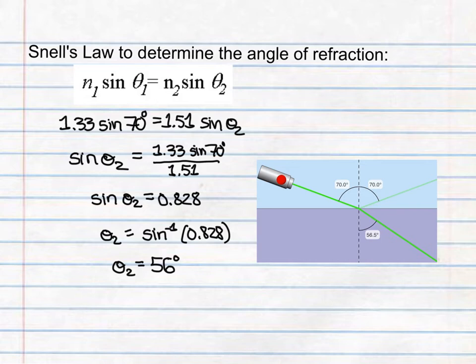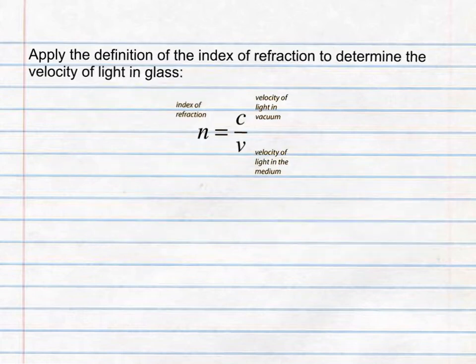Now let's try to determine what the velocity of light is in glass. To do that, we will apply the definition of the index of refraction to determine the velocity of light in glass. Recall that the index of refraction, or n, is a ratio of the velocity of light in a vacuum to the velocity of light in the medium, or glass, that we're looking for.